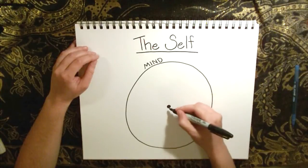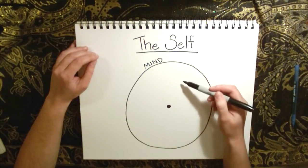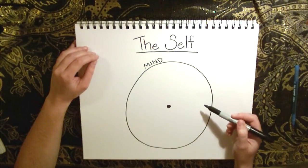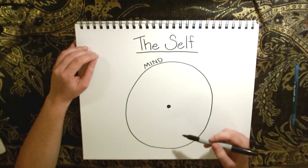Now this point of consciousness, this self, experiences everything that happens to it but it cannot experience itself directly.